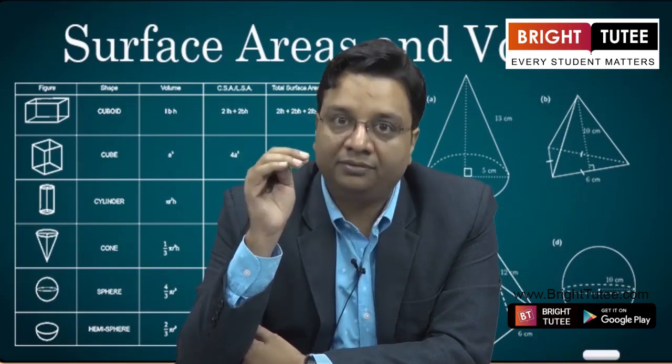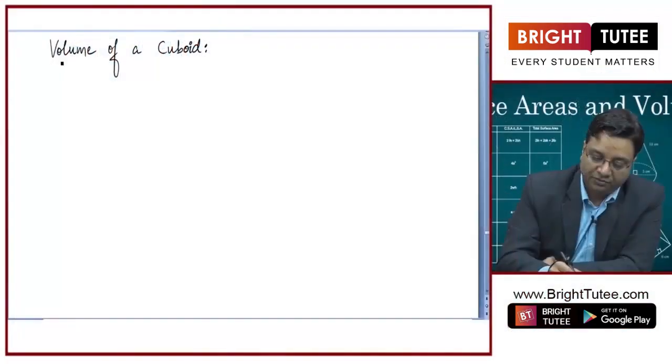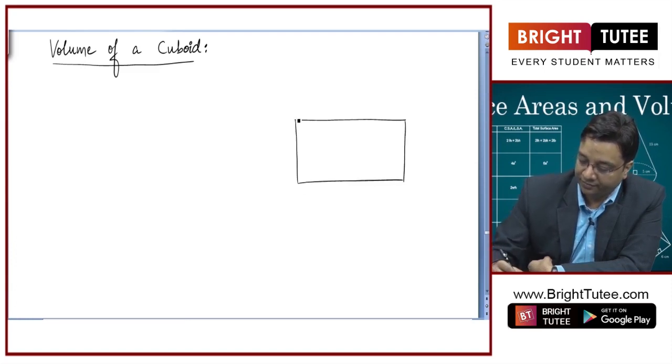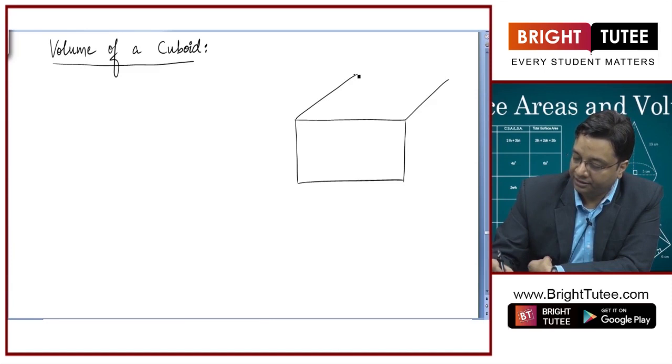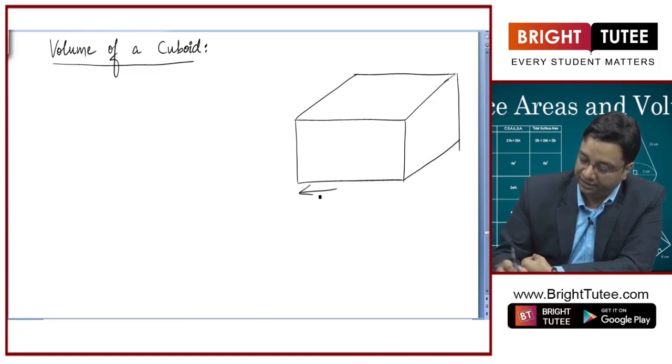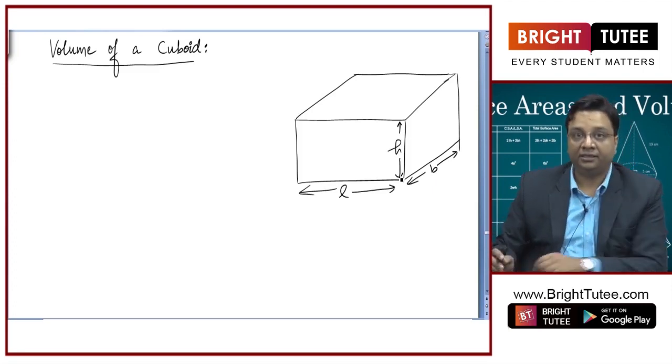In this lecture we will study about the volume of a cuboid and a cube. What is the volume of a cuboid? A cuboid has a shape like this. It has got a length, breadth and height. Let it be the length L and this is breadth B and this is height H. This we already know.